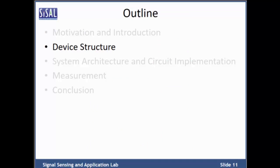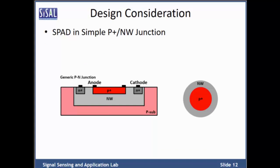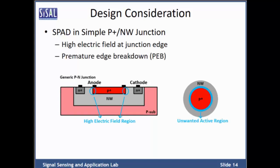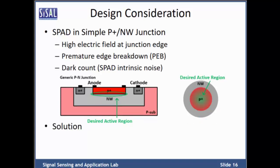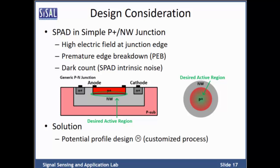Now I will explain the device structure. Starting from a simple P-plus N-well junction, the first issue is unwanted high electric field at the junction edge, which may lead to premature edge breakdown. This is called DCR, and the statistical analysis of single avalanche events defines the intrinsic noise of SPAD. Several approaches have been presented to make the desired avalanche region in the center. The first solution is potential profile design, which modifies the electric field at the junction periphery; however, this technique needs a customized process. Another well-known technique is the guard ring structure, which is available in a standard process, and our research focuses on this second approach.